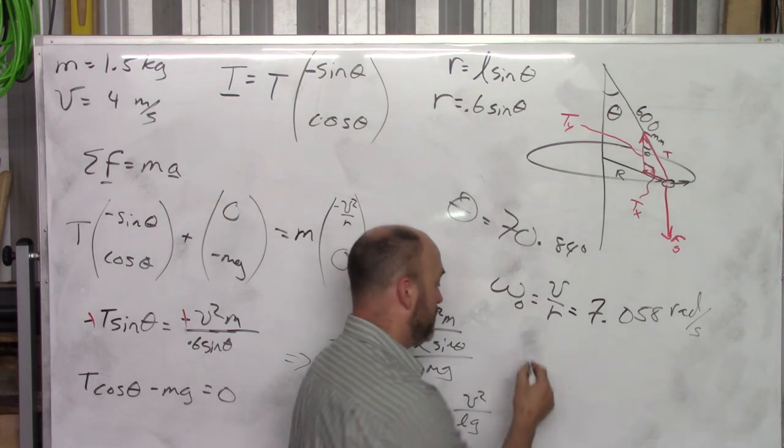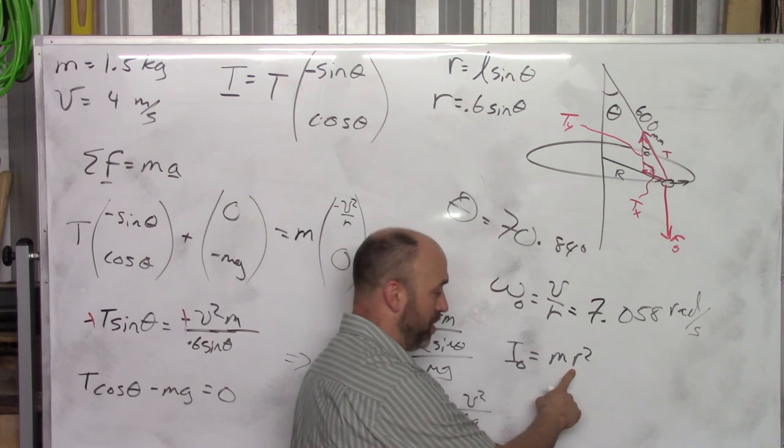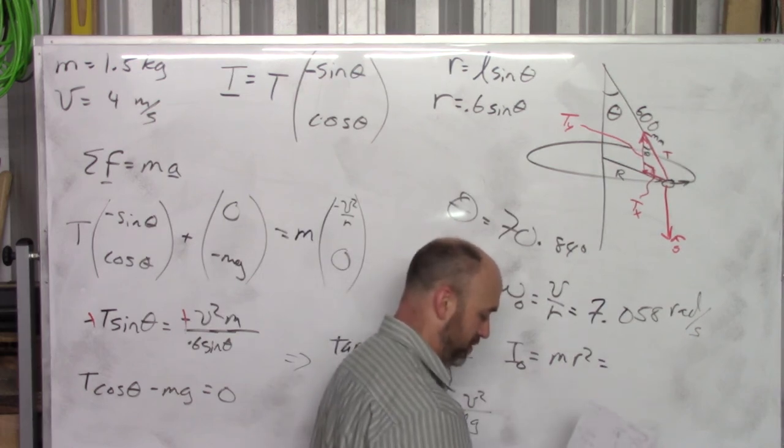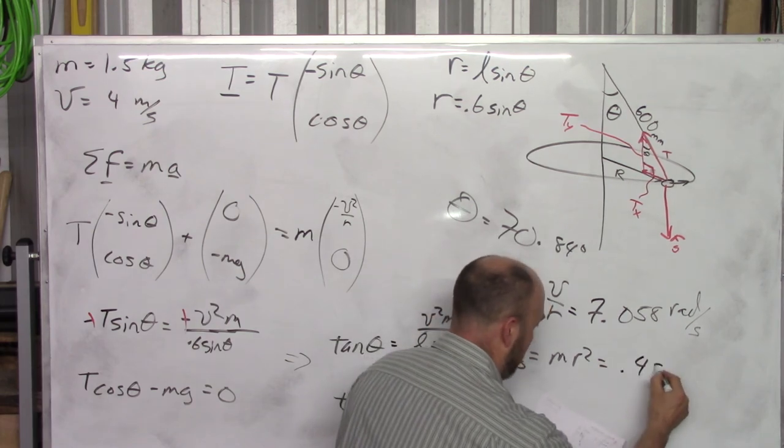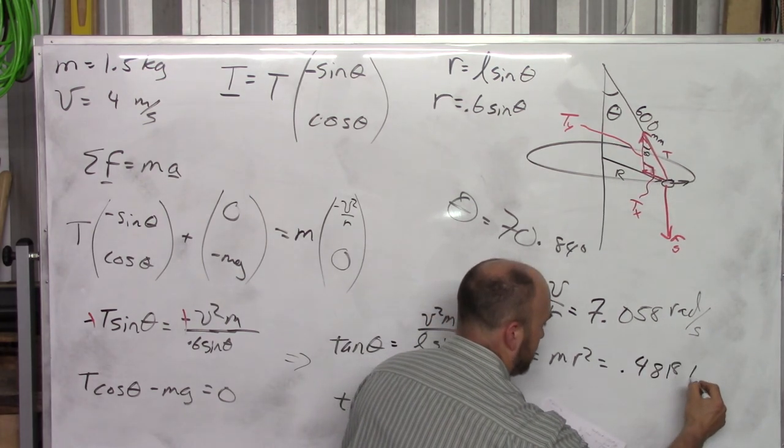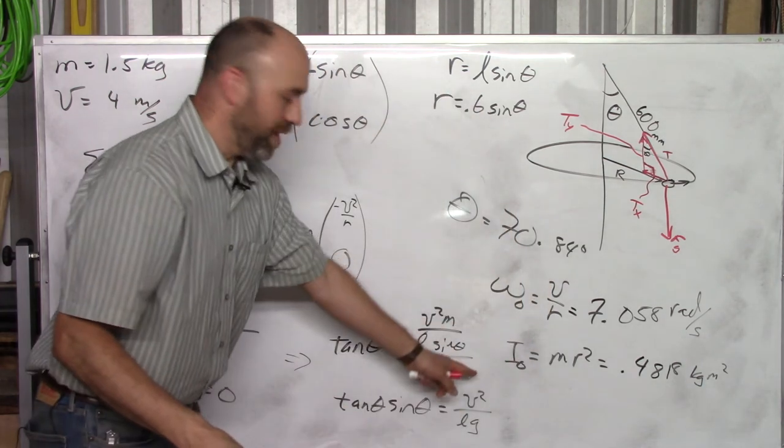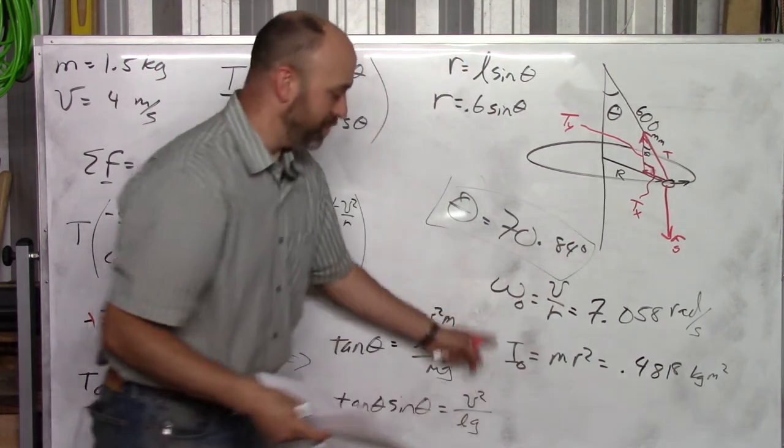Now as long as we're here, let's find i initial. That's just going to be mr squared. Now you know theta, you know r. You know mass before. So now you can get i initial. i initial is 0.4818 kilogram meters squared. You didn't need to find these for part A. This is the answer for part A. But you need to find these for part B. So you either do them now or come back and get them later.